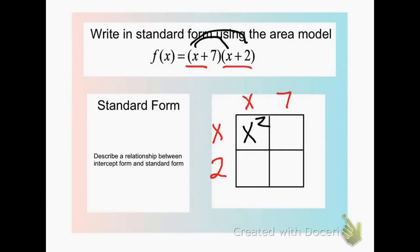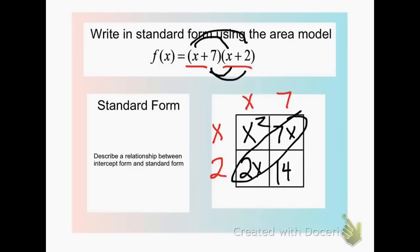And x times 2 gives us 2x. Then we distribute the 7: 7 times x is 7x, and 7 times 2 is 14. To write it in standard form, we combine our like terms — 7x and 2x — which gives us 9x.